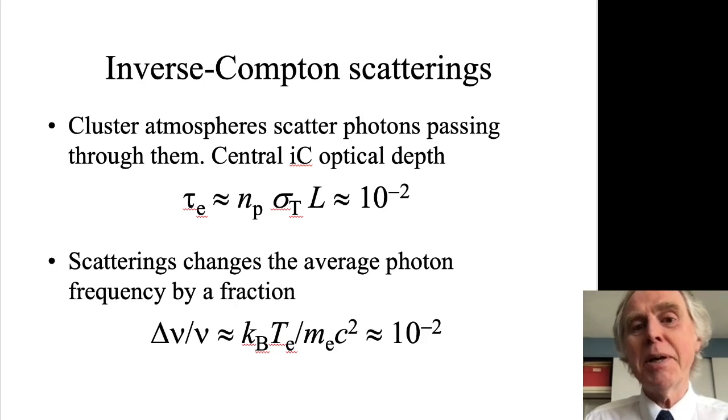That probability is just the number of scatterers per unit volume, I've written that as n_p here, the number of protons, assuming that the gas is entirely hydrogen, multiplied by the cross-sectional area. The cross-section for inverse Compton scattering at low energies is the Thomson scattering cross-section σ_T, multiplied by the path length through the cluster. Here I've taken about a megaparsec. If you stir those numbers together with the parameters I wrote down on the previous slide, you get 10^-2.